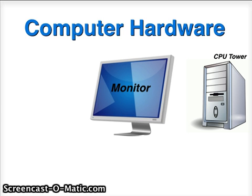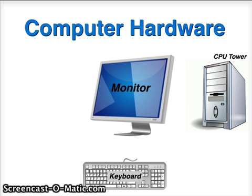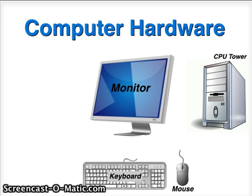A monitor is a device with a screen used to show computer images. A keyboard is a device used to enter letters into the computer. A mouse is a tool used to move the cursor and pointer around the screen.